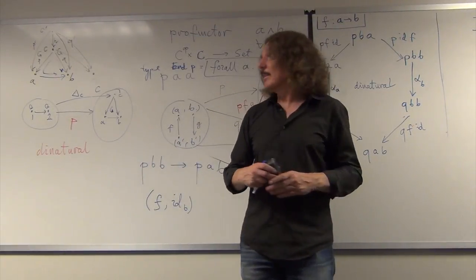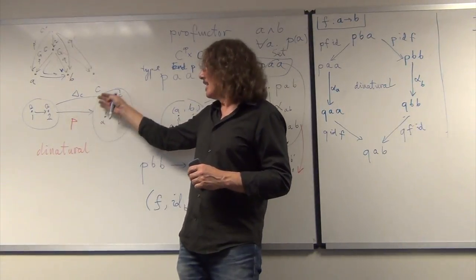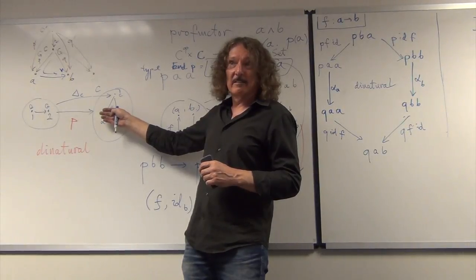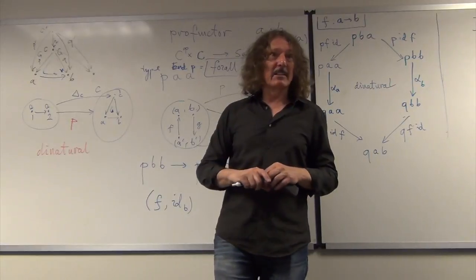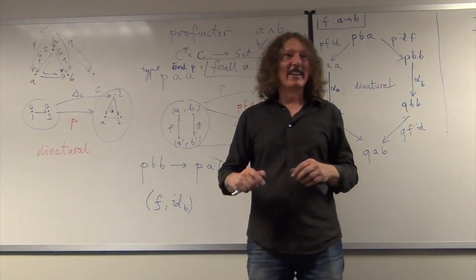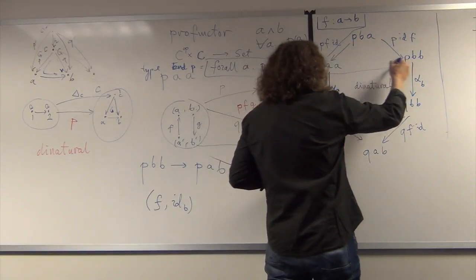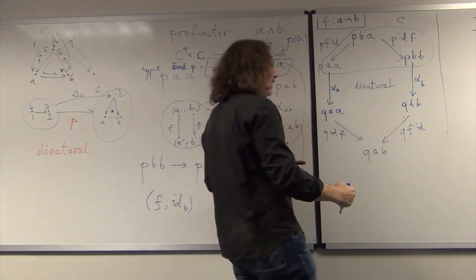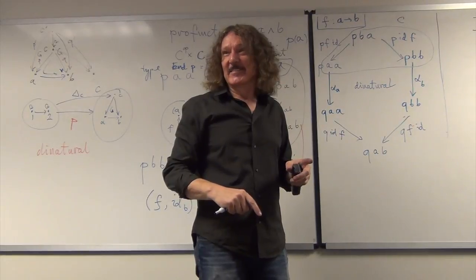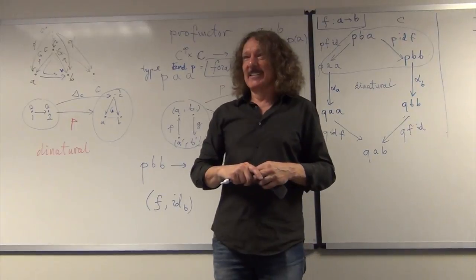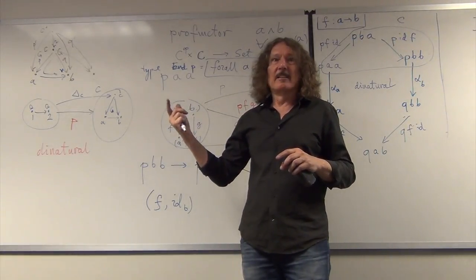The end can be defined using this diagram as a dinatural transformation. Specifically, wedges can be defined as dinatural transformations. If you replace P with the delta (const) profunctor, the three objects collapse to C and you get exactly the diamond that defines the wedge condition. So using dinatural transformations you can define wedges, and from wedges you can define ends. That's how you define ends.